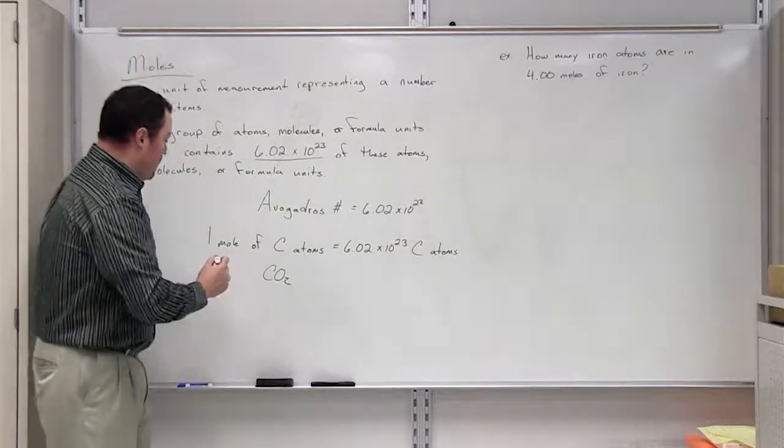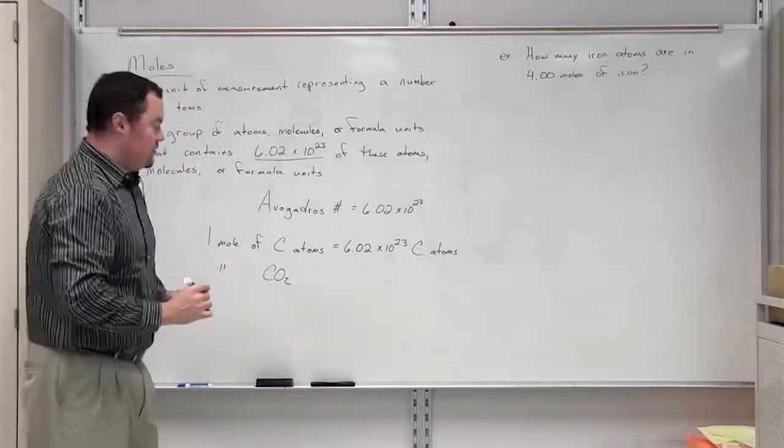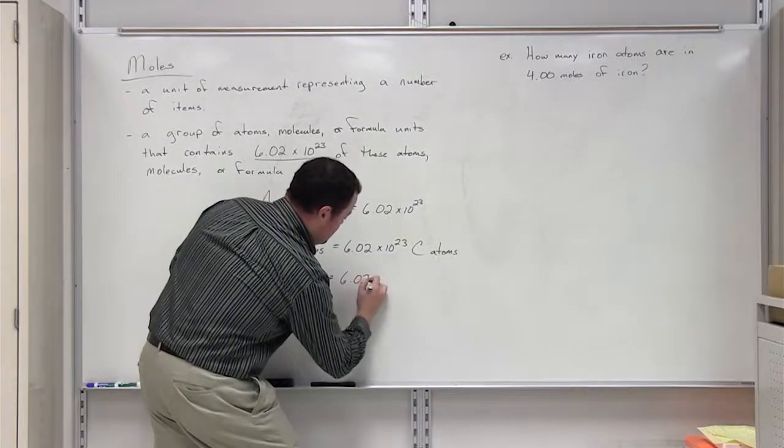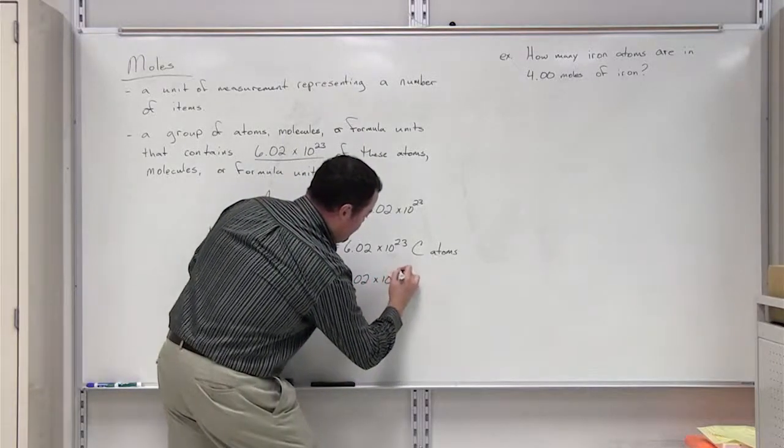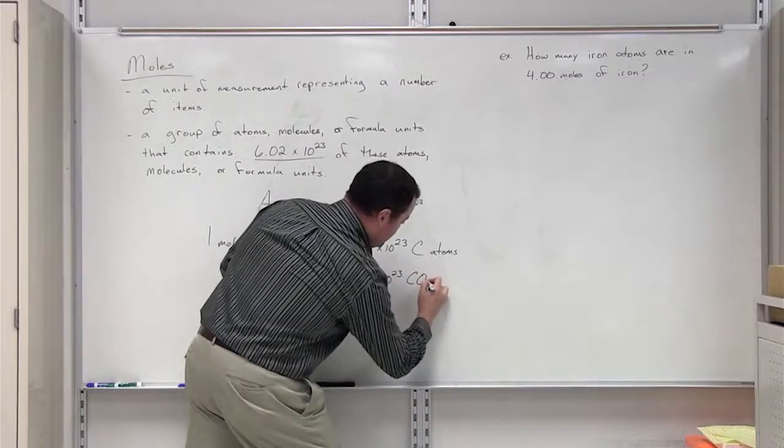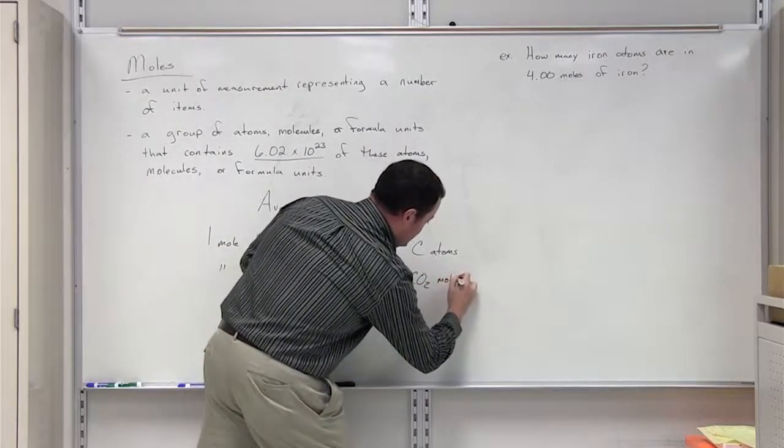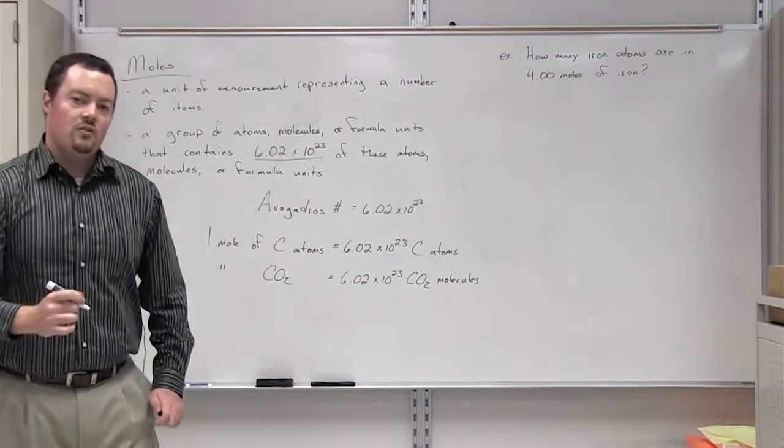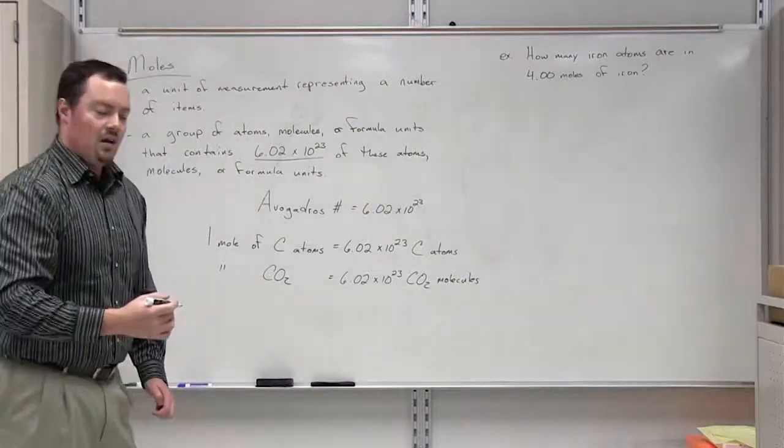If I have one mole of carbon dioxide, then I simply have 6.02 times 10 to the 23rd power carbon dioxide molecules.